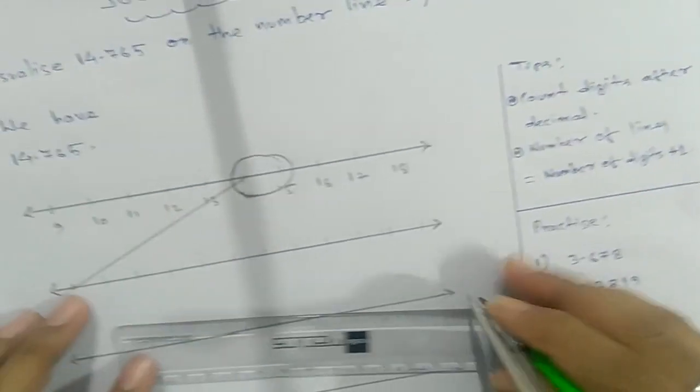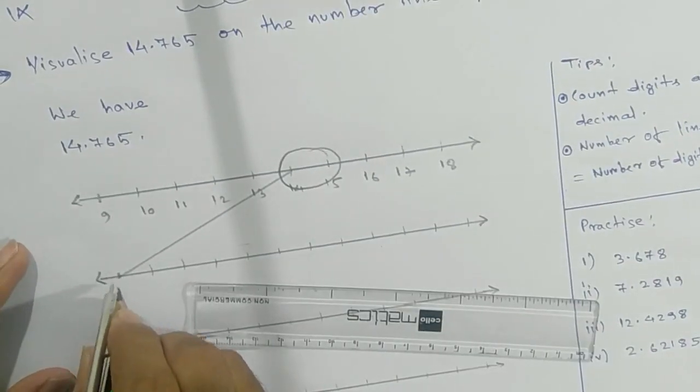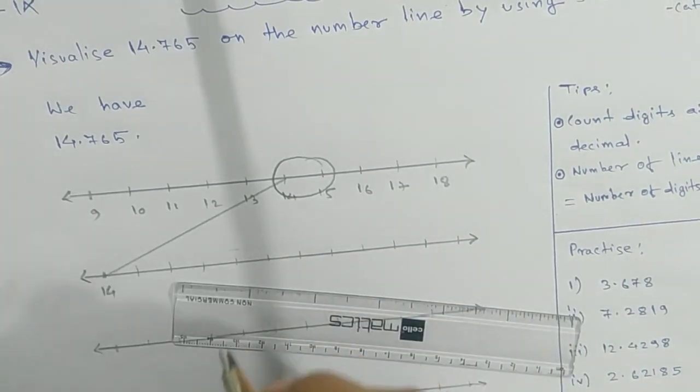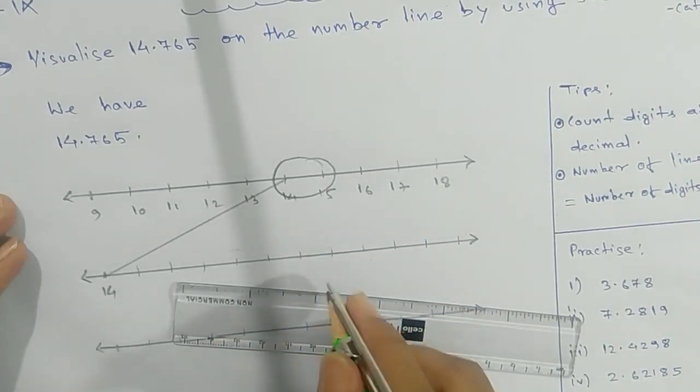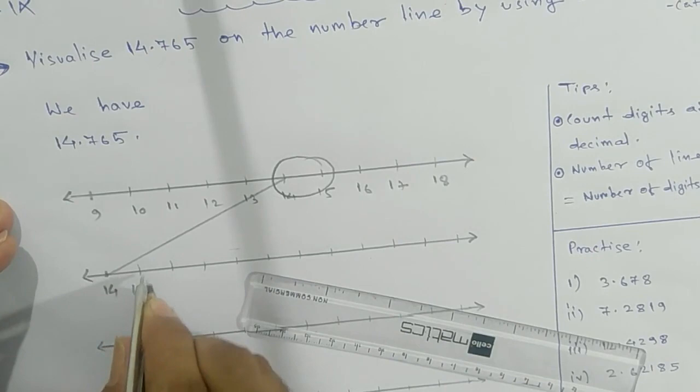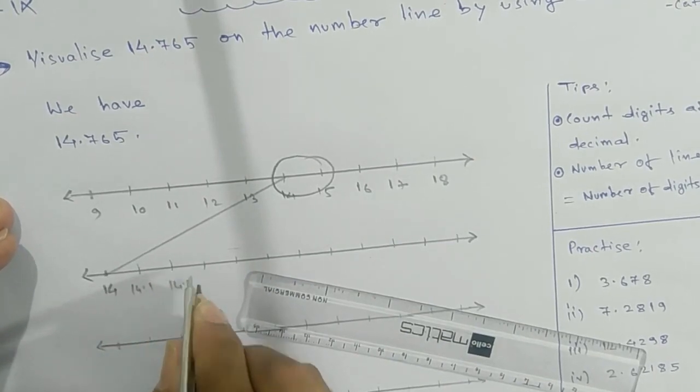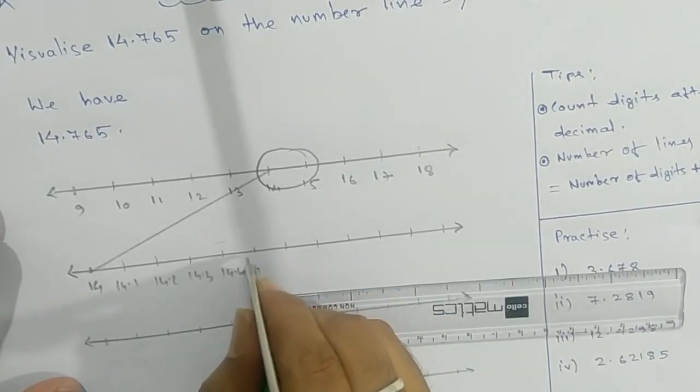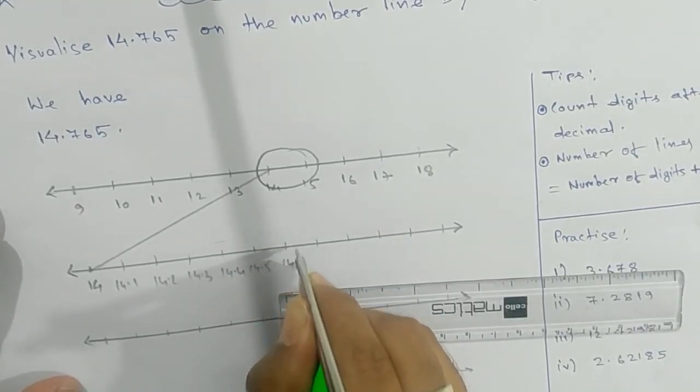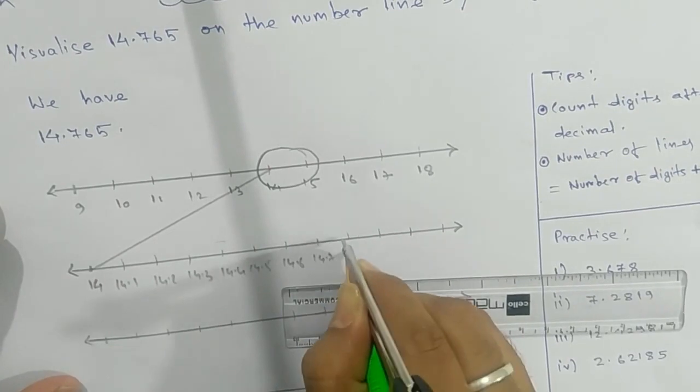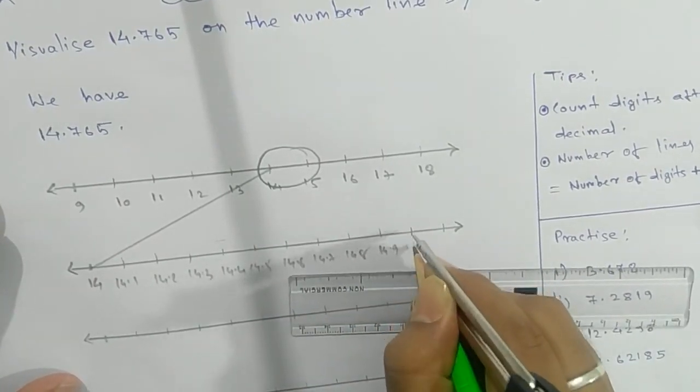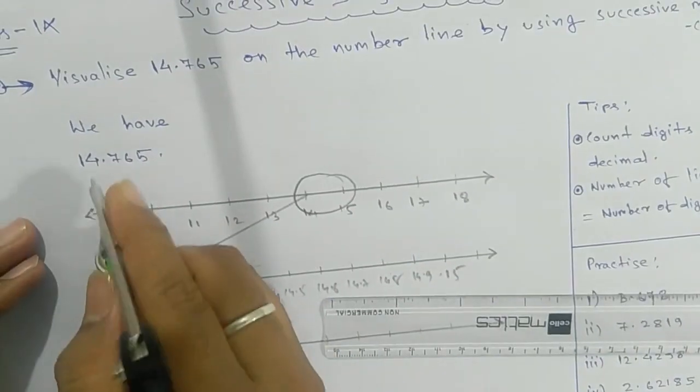14 will be your starting point. Magnify it. This is your first one, 14. Now break 14 and 15 into 10 equal parts. This can be written as 14.1, 14.2, 14.3, 14.4, 14.5, 14.6, 14.7, 14.8, 14.9, and 15.